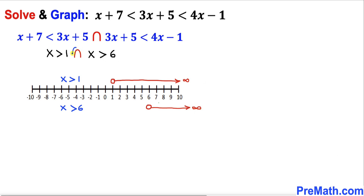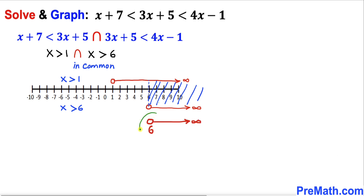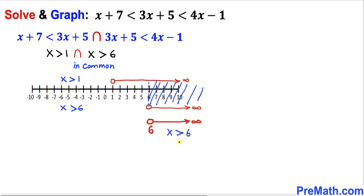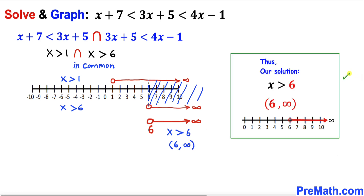Since we are dealing with the intersection symbol, we look for the part of the graph that is in common between these two. The common part starts at 6 and continues to positive infinity. So the intersection graph gives us the final answer: x is greater than 6, or in interval notation, (6, positive infinity).